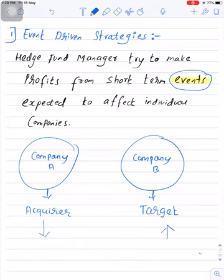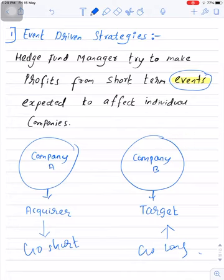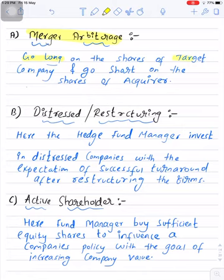Here, what the fund manager can do is go long on the shares of the target company and simultaneously go short on the shares of the acquirer company. This type of strategy is called a merger arbitrage strategy — this is the very first subcategory under event driven strategies. Under merger arbitrage, the fund manager goes long on target company shares and simultaneously goes short on acquirer shares.